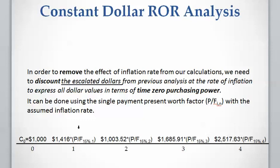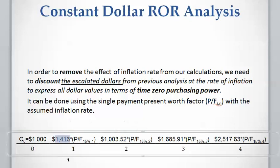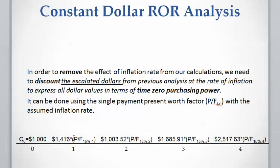As you can see here, we discount each payment by the inflation rate of 15 percent. The payment at present time is not affected by the inflation rate. Starting from year one, we multiply the escalated dollar cash flow by the single payment present worth factor — 15 percent inflation rate with a discounting period of one. For year two, the same inflation rate applies with a discounting period of two, and so on for years three and four.